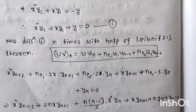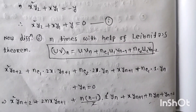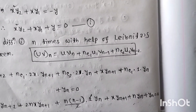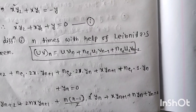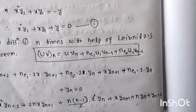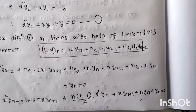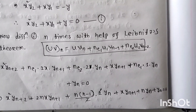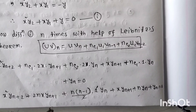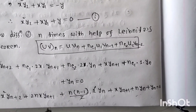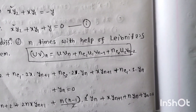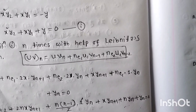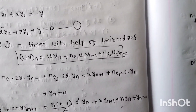Continuing: nC2·2·y_n, and from the x·y1 term we get x·y_(n+1) + nC1·(1)·y_n. Combining all terms gives x²·y_(n+2) + (2n+1)·x·y_(n+1) + (n²+1)·y_n = 0, which is what we needed to prove.